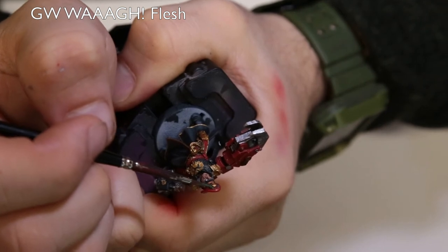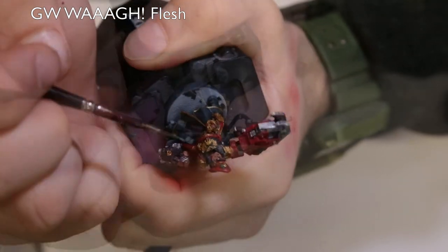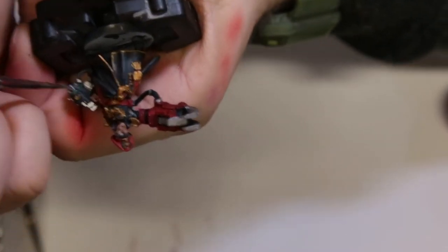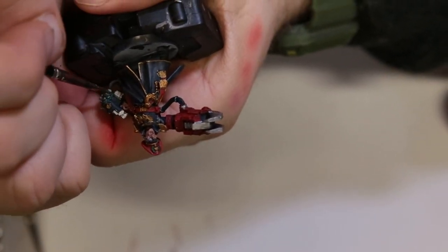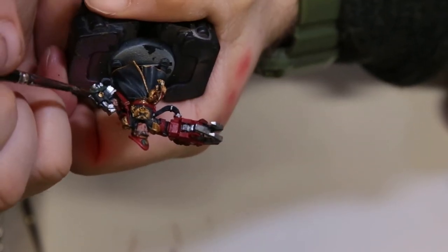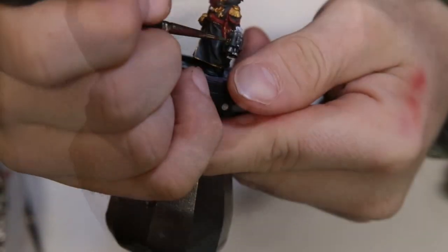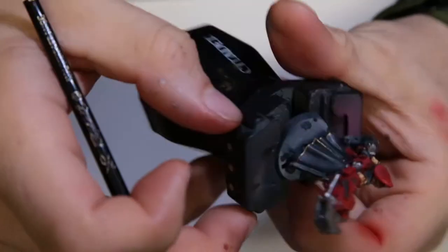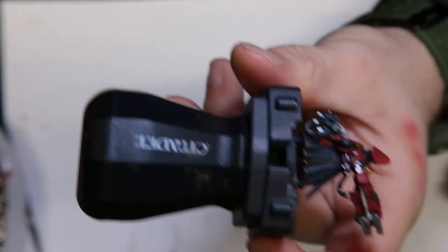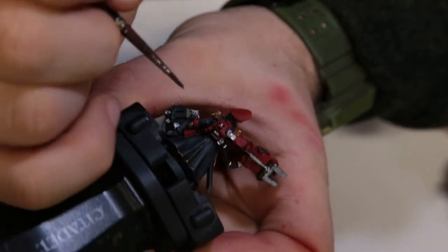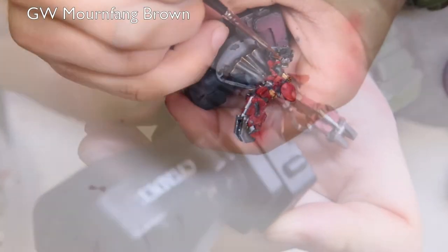Next we're on to Warp Flesh. We're painting the green thing on his hat. In case you all don't know what these are called, like I didn't, and had to spend 15 minutes googling it, it's called a Laurel. So, it's a Laurel Wreath. We're painting that in Warp Flesh. That's our base color for it. Painting that on the bolter, we're painting that on the hat.